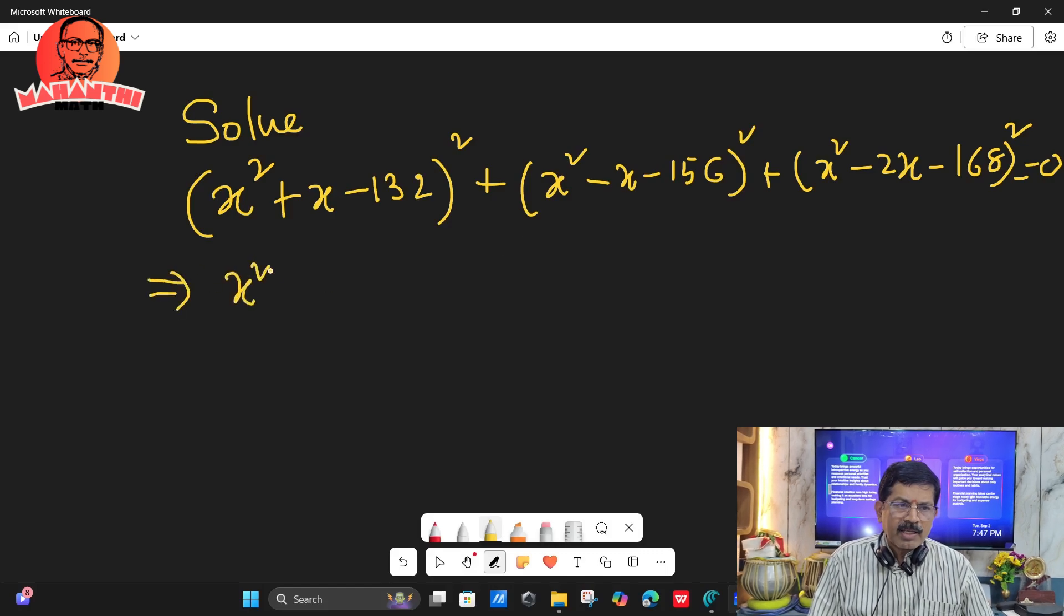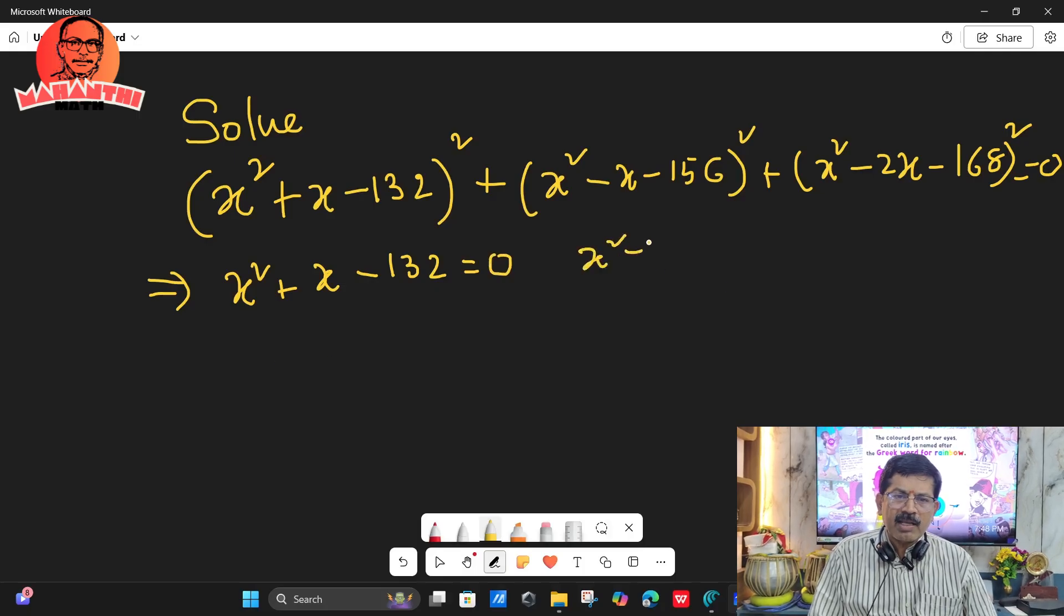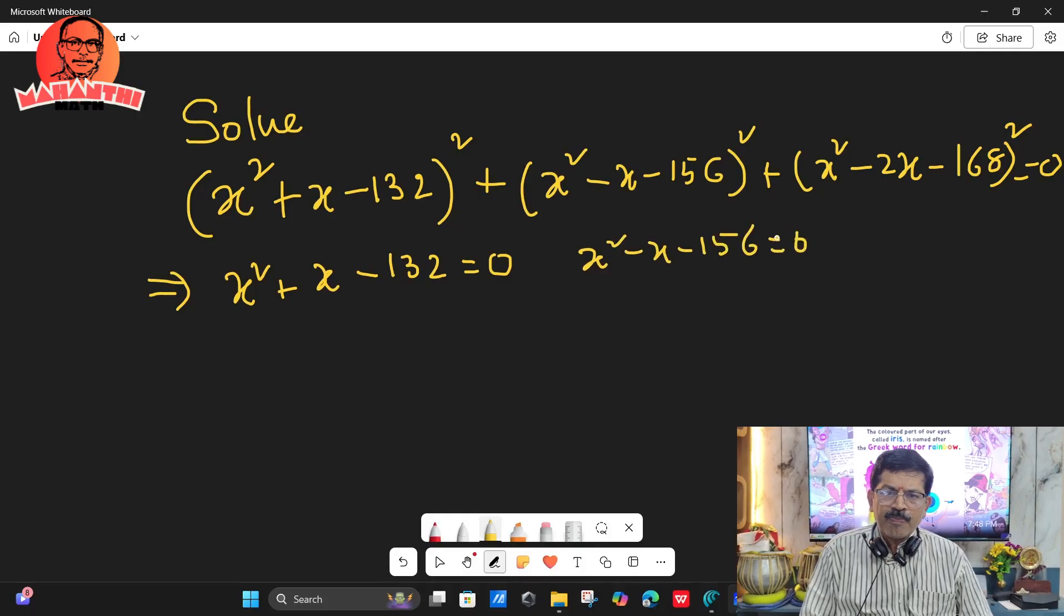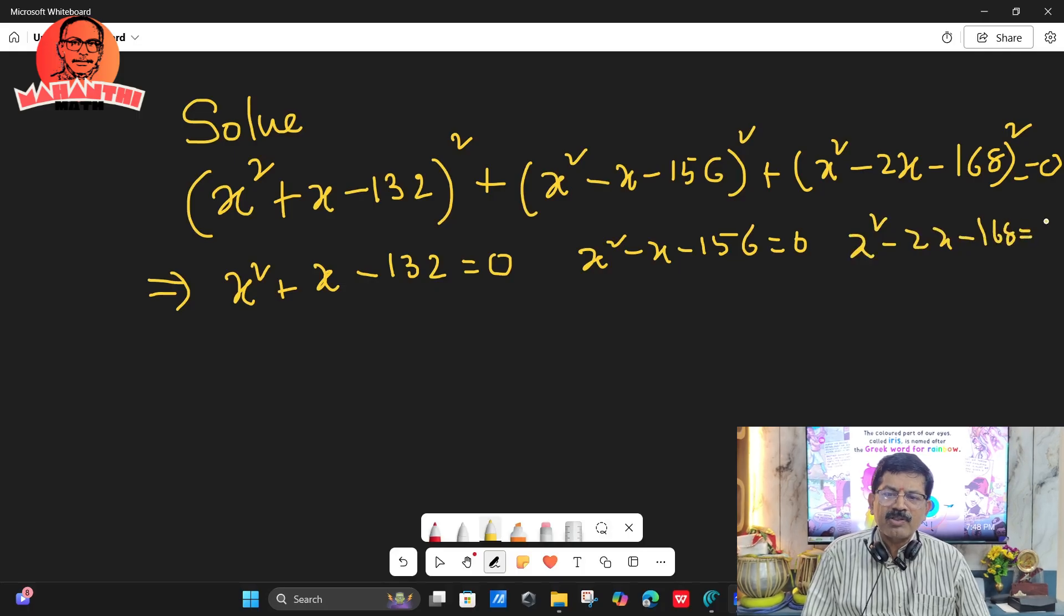So this implies first term x² + x - 132 = 0. Therefore, that equal to zero. And second one, x² - x - 156 = 0. Third one, x² - 2x - 168 = 0.